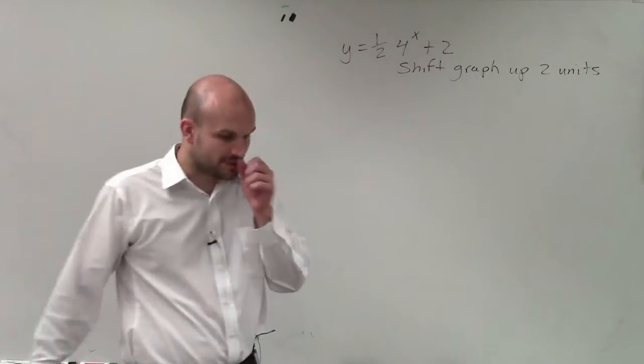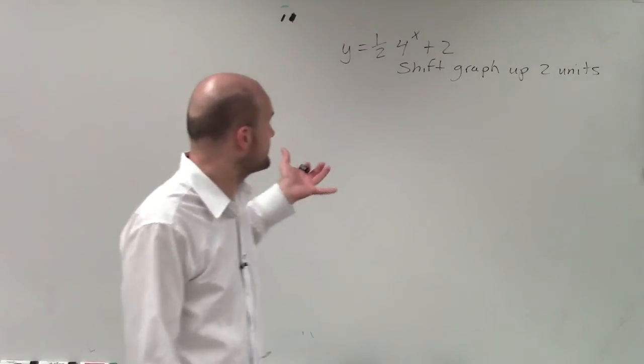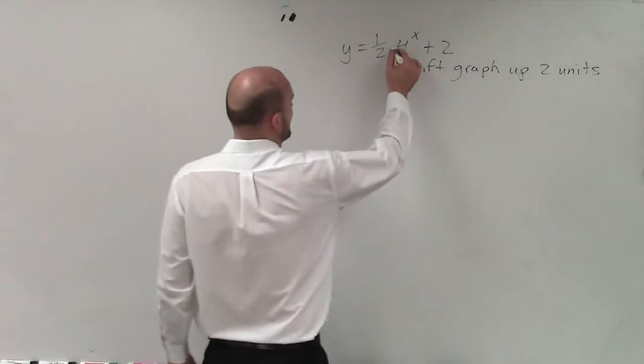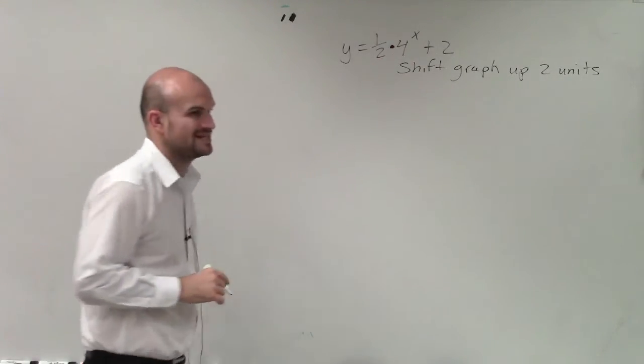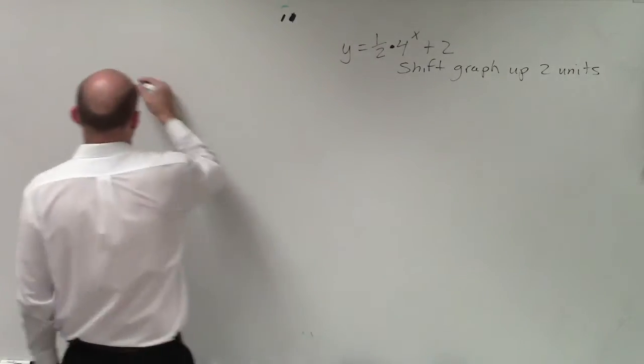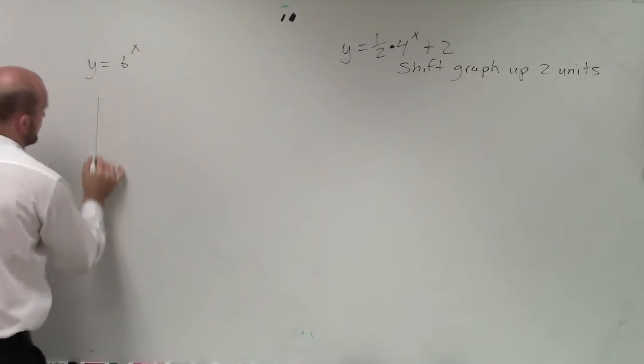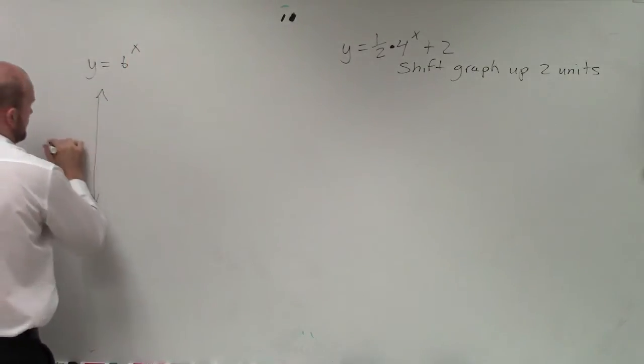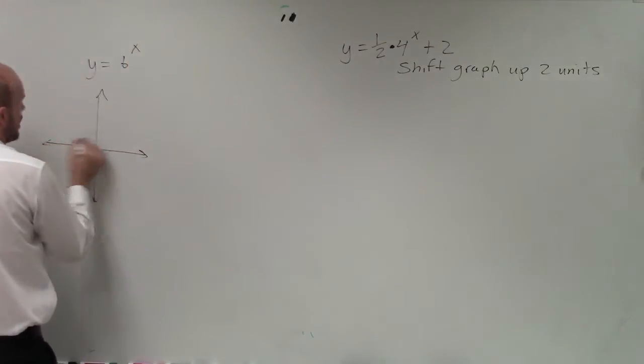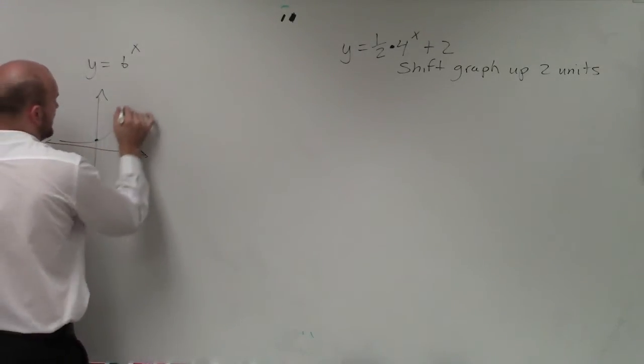Okay, so now what I need to do is go into graphing the parent graph. Now, what I have here is 1 half times 4 raised to the x. When we graph something that's just in the form of y equals b to the x, we know that the graph is always going to have a y-intercept at 0 comma 1 and go and look like this.